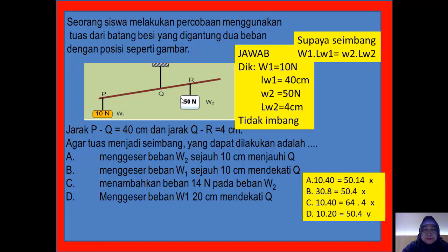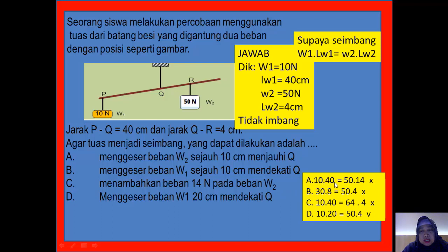Yang A: menggeser beban W2 sejauh 10 cm menjauhi titik tumpuh. Awalnya 4 disuruh mundur 10, jadi LW2 menjadi 14. Masukkan: W1 kali LW1 = 10 kali 40. Apakah sama dengan W2 kali LW2 = 50 kali 14? 10 kali 40 = 400, 50 kali 14 = 700. Tidak sama, berarti salah.